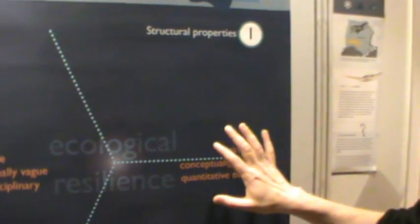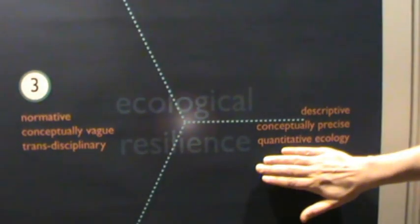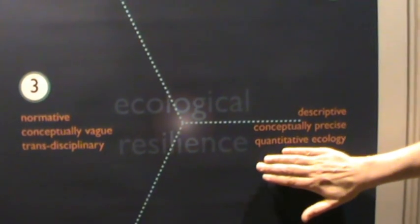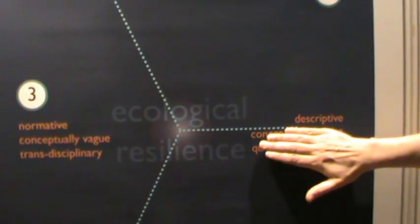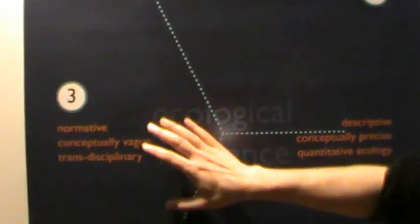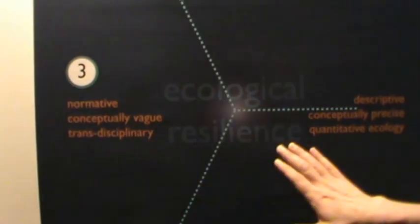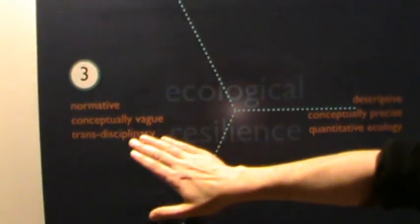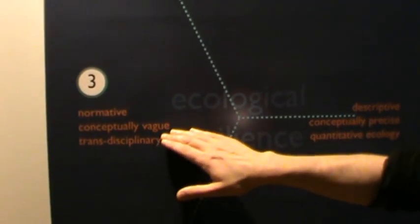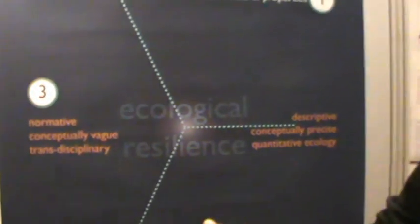One axis separates concepts that are useful in quantitative ecology — we can relate them to specific metrics, they are conceptually precise, and they are descriptive of the ecological properties of the system. On the other side, we have concepts that don't apply to this category: they are often more transdisciplinary, conceptually vaguer, or they can be normative — meaning they describe good or bad things rather than descriptive values like high and low.